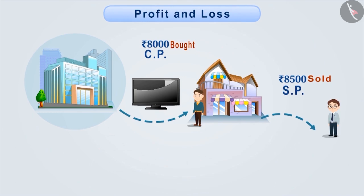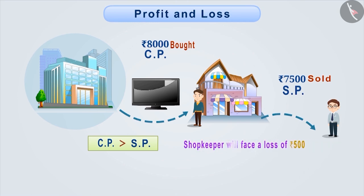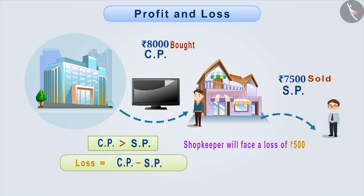Now, suppose the shopkeeper had to sell the television, which he purchased for Rs. 8000, at the price of Rs. 7500 for some reason. In this situation, the shopkeeper cannot make a profit because the selling price is less than the cost price. In such a situation, there will be a loss of Rs. 500 to the shopkeeper. If the selling price is less than the cost price, then loss is equal to cost price minus selling price.